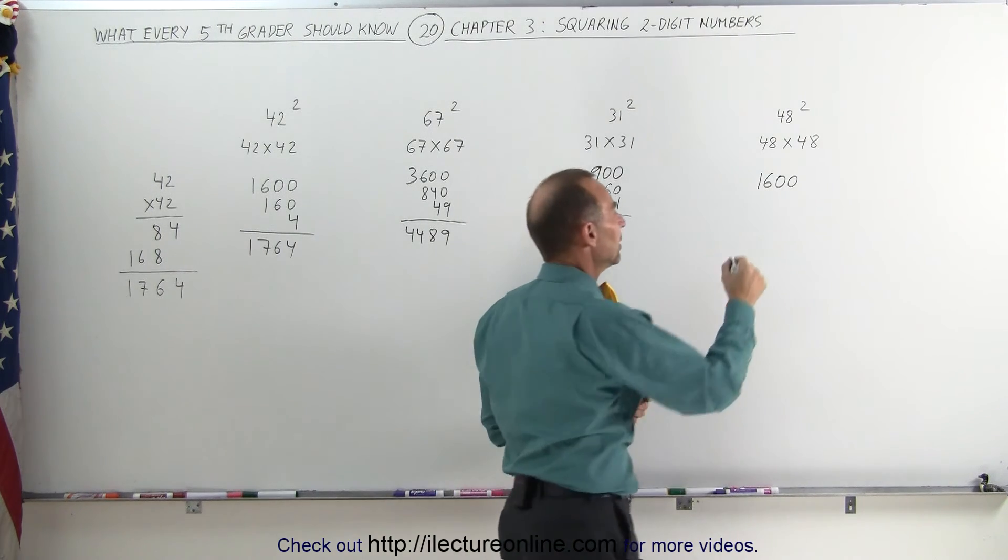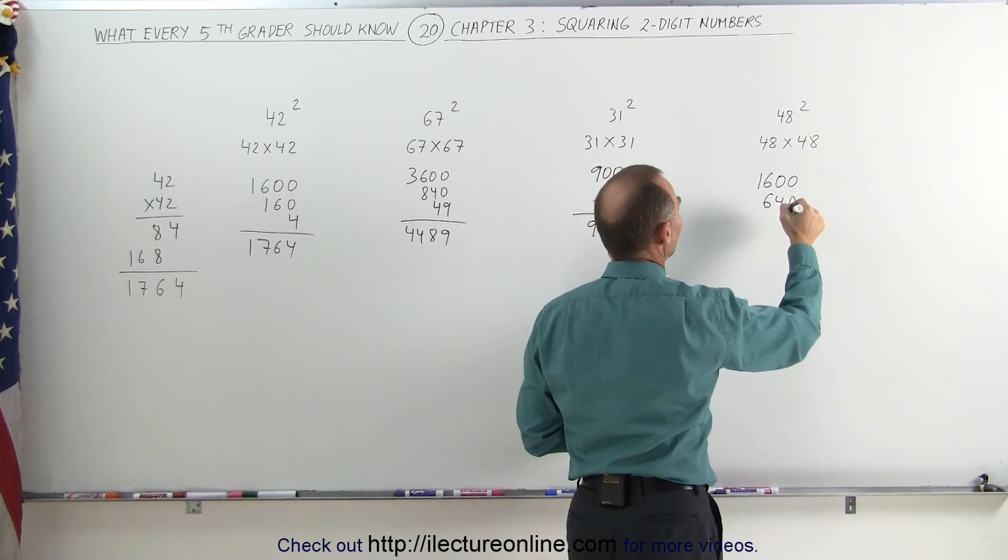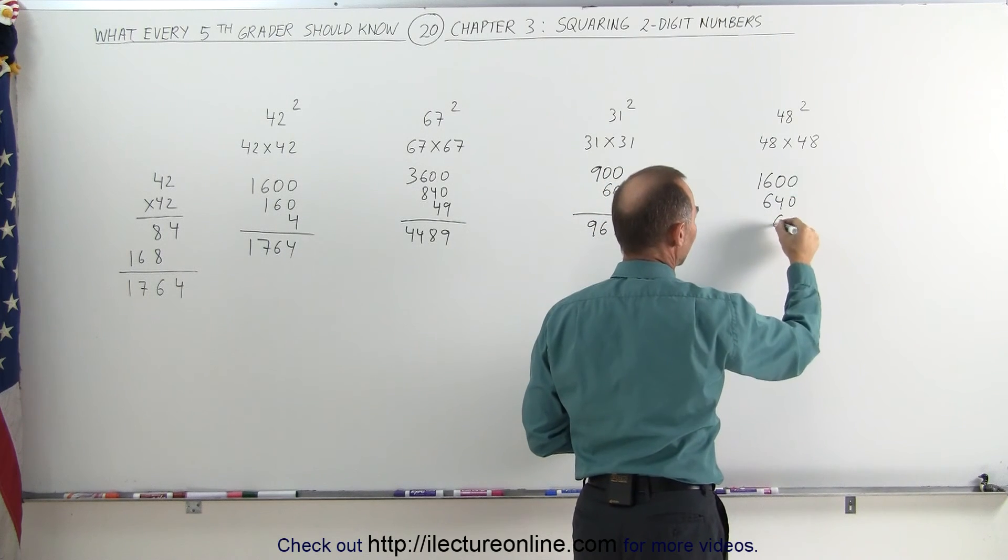Add that here. And then finally, 8 times 8 is 64. Add 64.